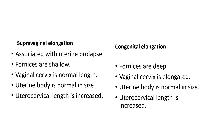We will differentiate between supra-vaginal elongation and congenital elongation. Supra-vaginal elongation is called cervical descent because it is associated with uterine prolapse. In supra-vaginal elongation, the uterus is coming down and the cervix is coming down. Therefore, the fornices — the shallow spaces on the sides of the vagina — will be narrow because the vagina will be filled with the cervix and uterus, so the fornices will be shallow.